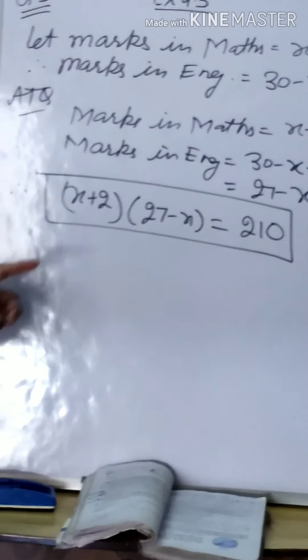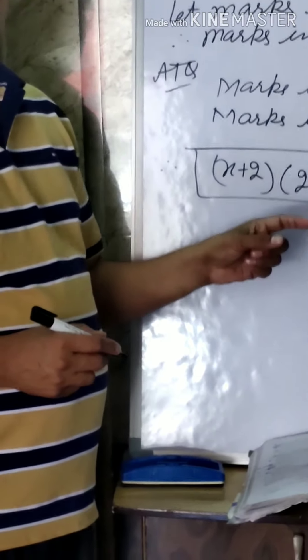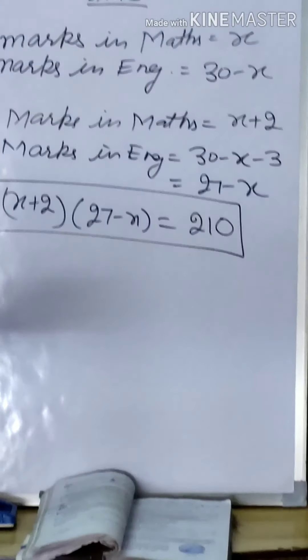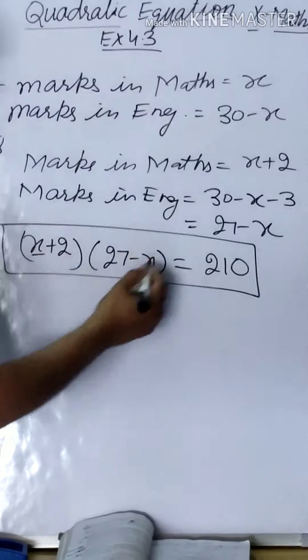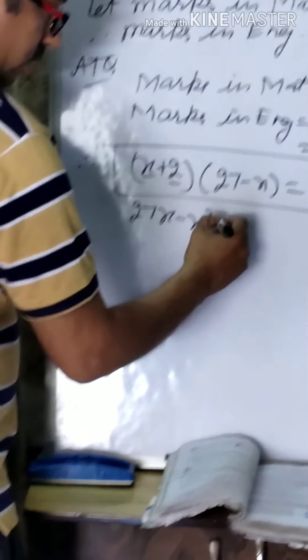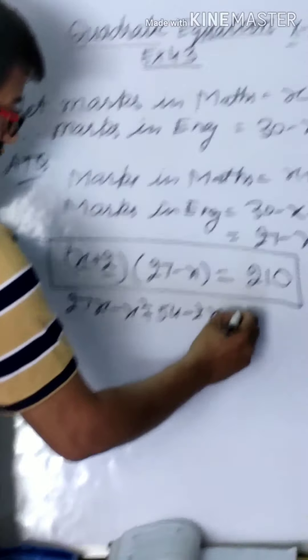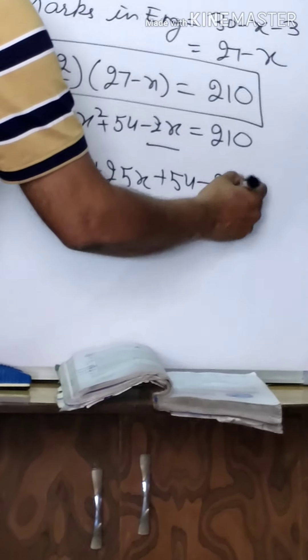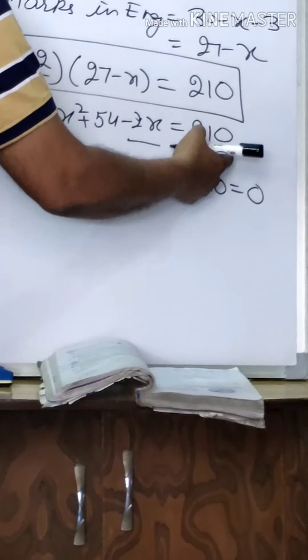This is the main equation. First of all, the main equation should be correct. If the main equation is correct, after simplification the quadratic equation will come and your answer will be correct. Now multiply: x(27) - x² + 2(27) - 2x = 210. Simplifying: -x² + 27x - 2x + 54 = 210. So -x² + 25x + 54 - 210 = 0, shifting 210 to this side.